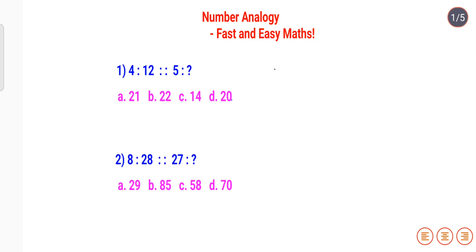The first question we have is: what 4 is to 12. You need to find the relation between 4 and 12. Whatever relation you get, you have to apply the same relation between 5 and the unknown number. The answer you get should be part of your options — if it's not, you should try and rework on that relation.